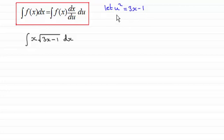In the usual way though, we've got to find du/dx, but because we've got u squared here, we're going to need to use implicit differentiation.